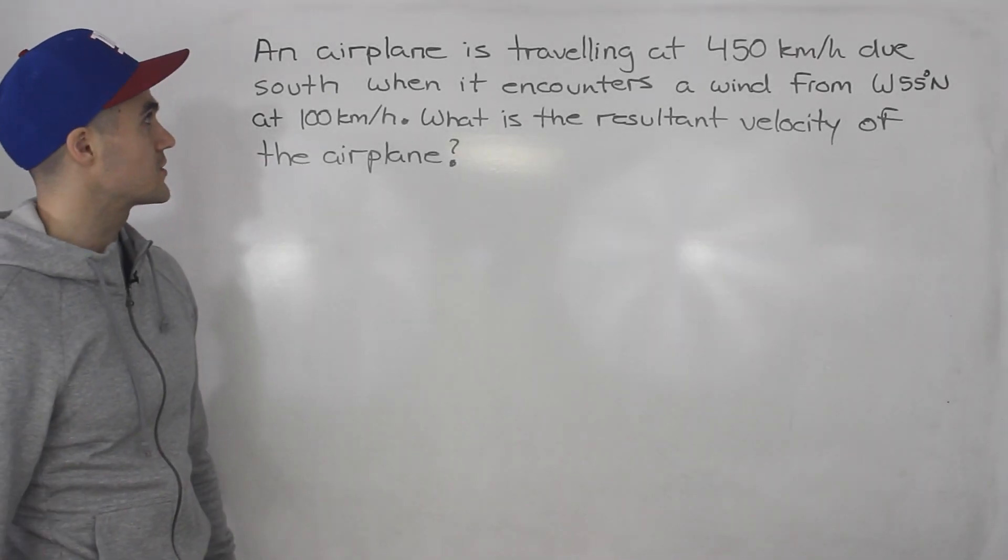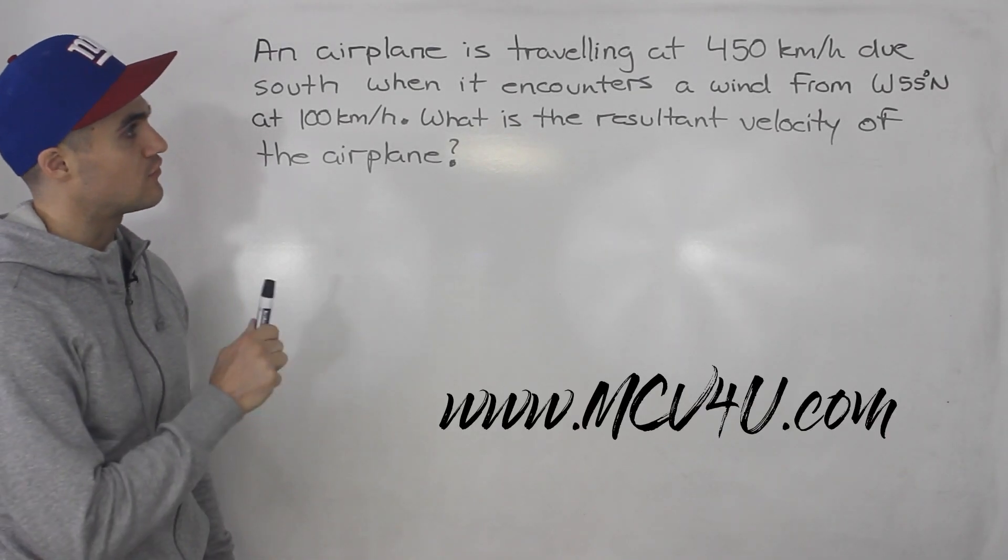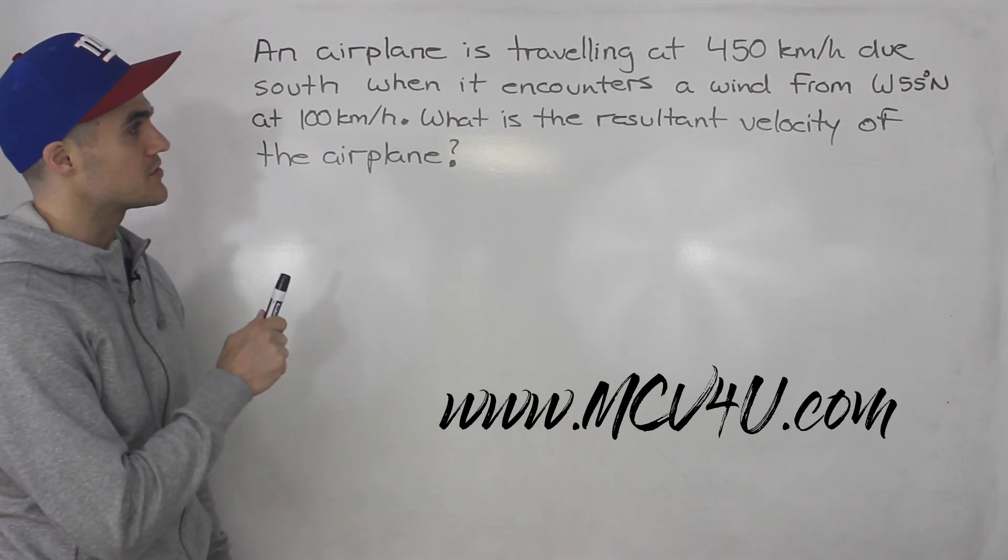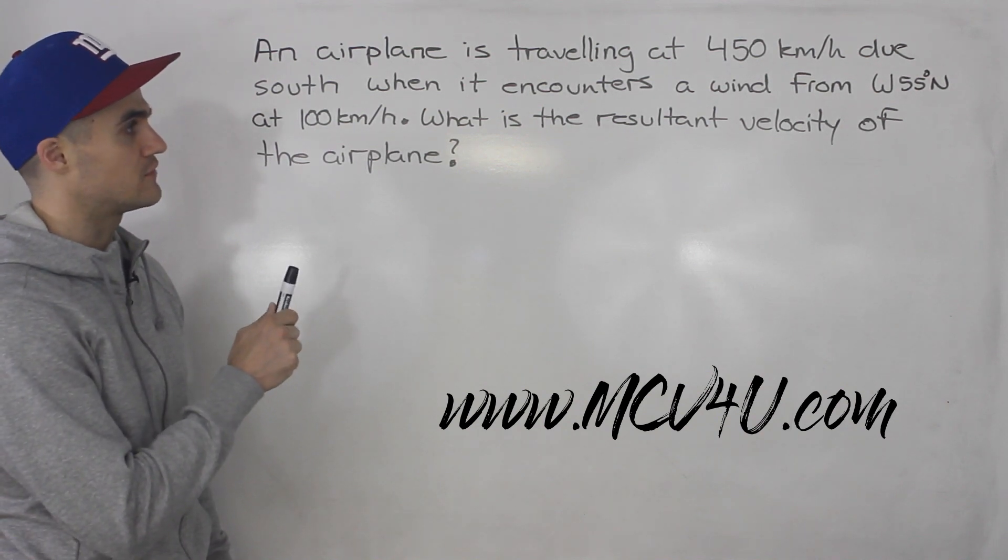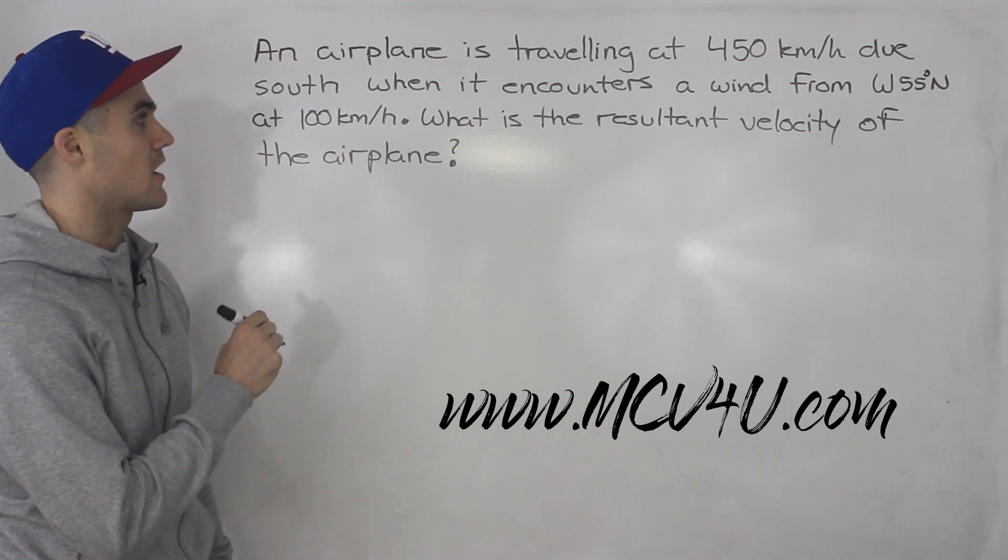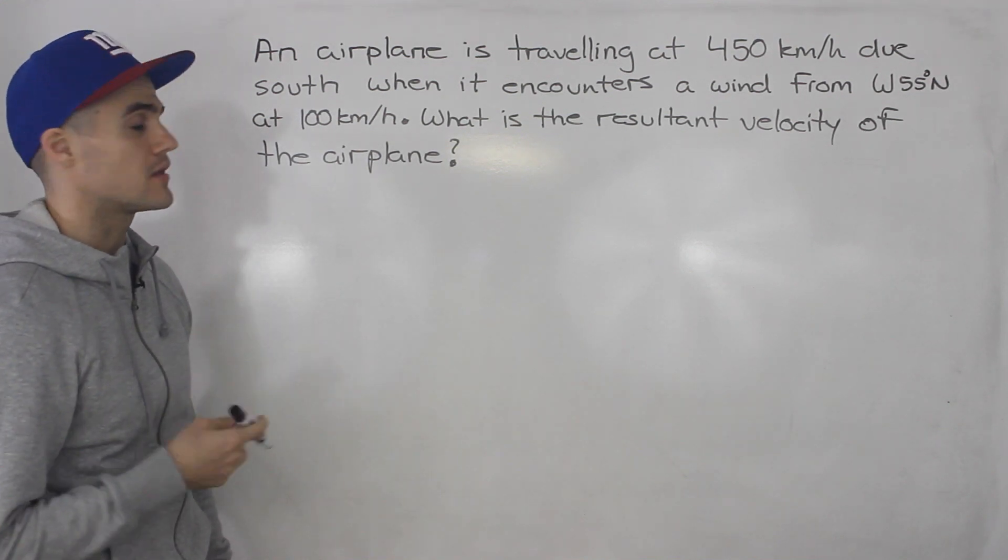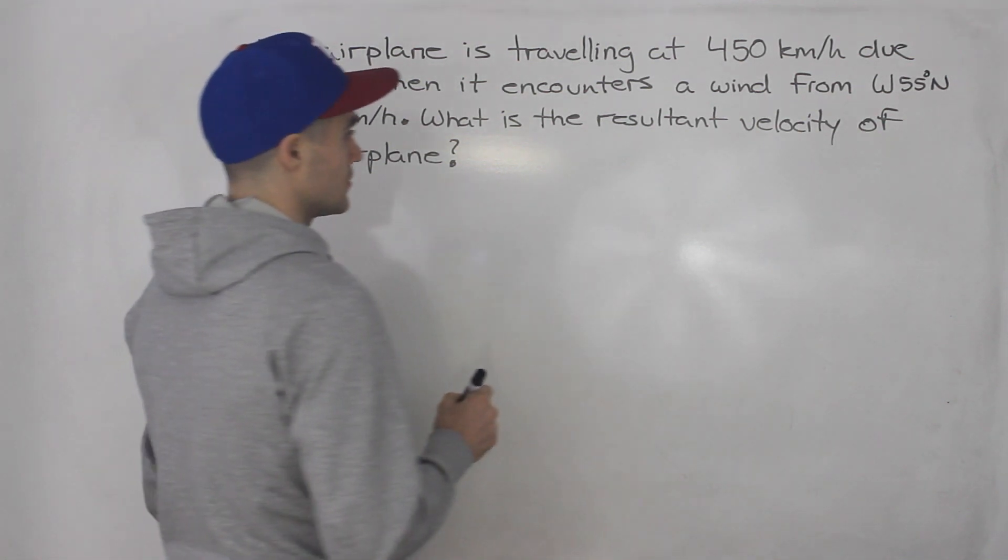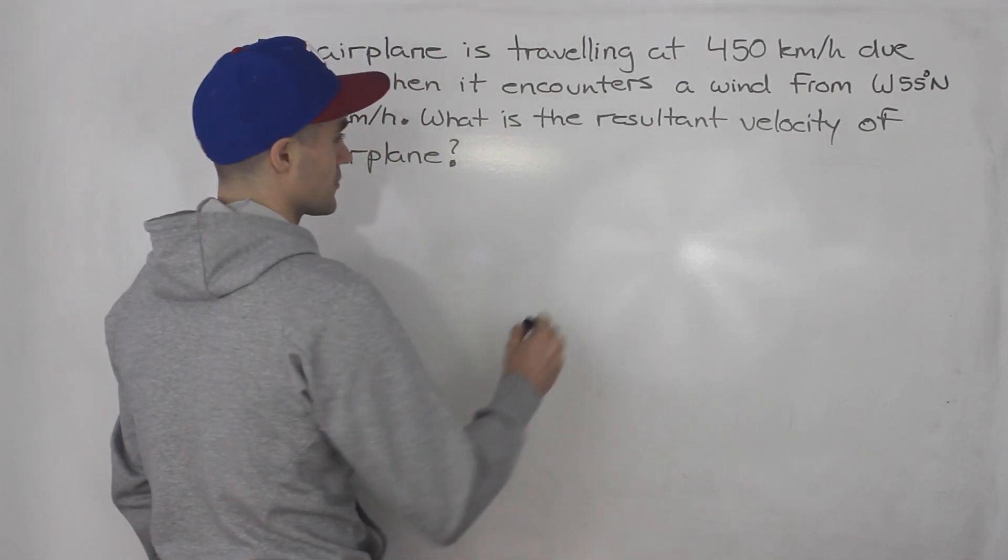What's up guys, moving on to the next question. An airplane is traveling at 450 kilometers per hour due south when it encounters a wind from west 55 degrees north at 100 kilometers per hour. What is the resultant velocity of the airplane? Okay, so first thing you want to do like usual with this type of question, draw a diagram.